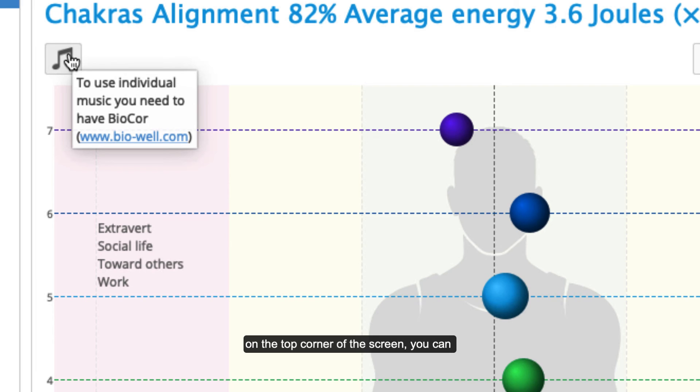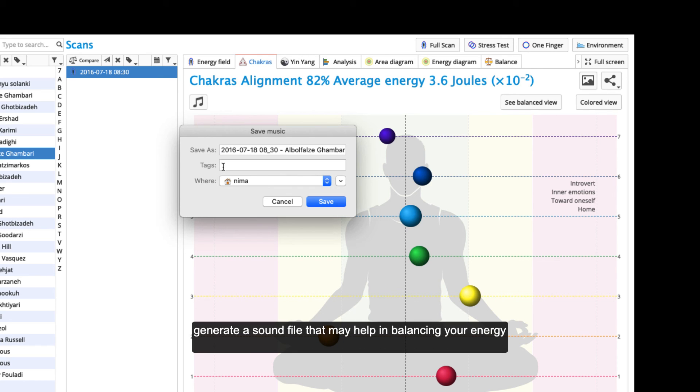By clicking on the music sign on the top corner of the screen you can generate a sound file that may help in balancing your energy centers.